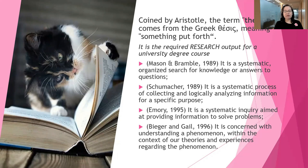Coined by Aristotle, the term thesis comes from the Greek word thesis, meaning something put forth. We can also look at it from the root of research — re for repeat and search to look for — as in repeatedly looking for the answers to a particular problem. Mason and Bramble defined it as a systematic, organized search for knowledge or answers to questions. Schumacher defines it as a systematic process of collecting and logically analyzing information for a specific purpose. Emory defines it as a systematic inquiry aimed at providing information to solve problems. And Bigger and Gail say that it is concerned with understanding a phenomenon within the context of our theories and experiences regarding that phenomenon.